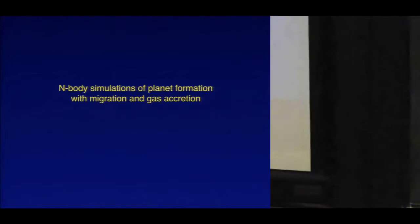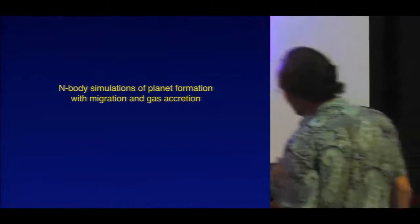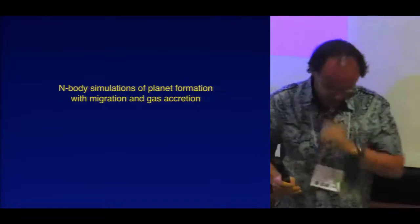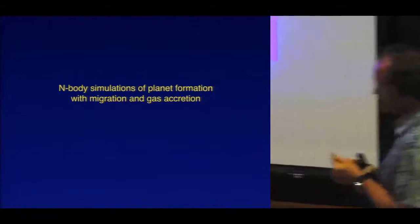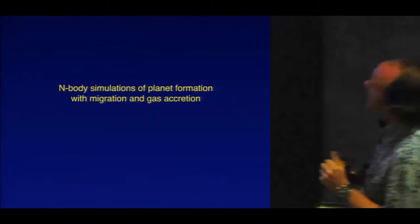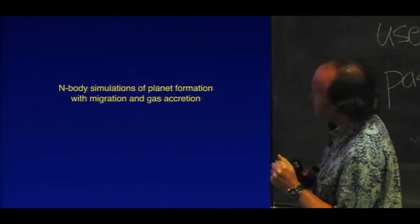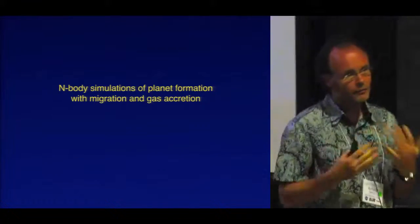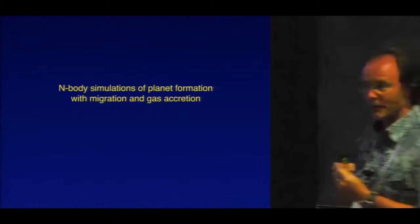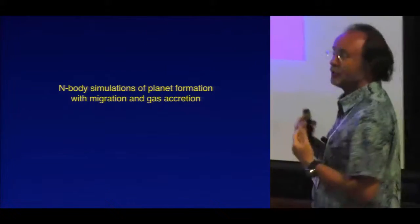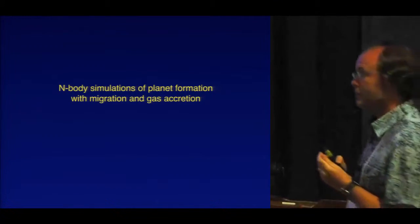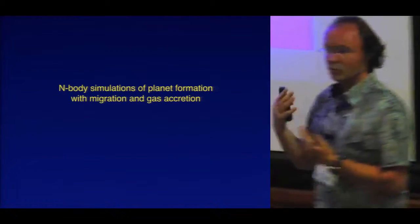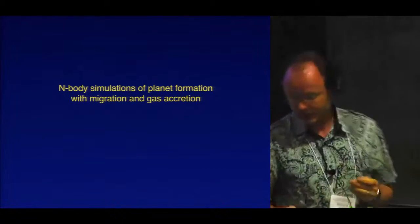What happens if we put these models of migration together with a model of planet formation? I'm going to show a couple of models addressing two different issues: first, the formation of compact systems of super-Earths and Neptune-like planets like those observed by the Kepler spacecraft, and second, the formation of giant planets.